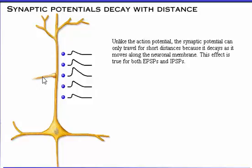Unlike the action potential, the synaptic potential can only travel for short distances because it decays as it moves along the neuronal membrane. This effect is true for both excitatory postsynaptic potentials and inhibitory postsynaptic potentials.